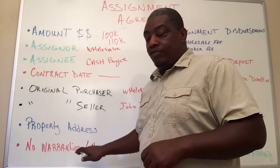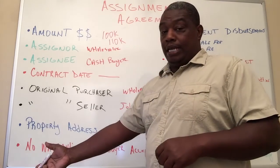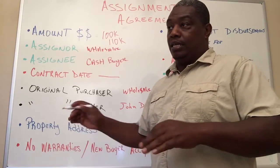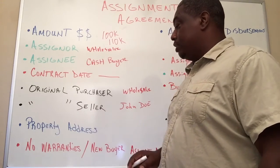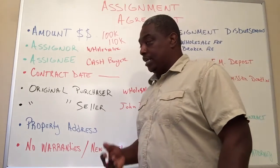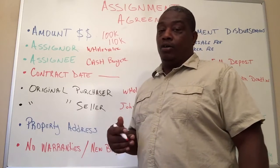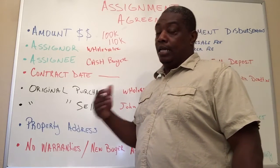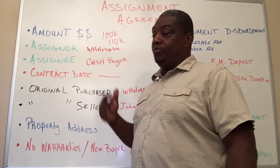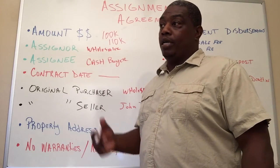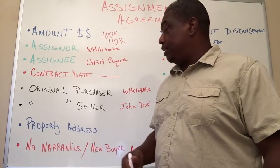And then you need to have the property address. As I stated, the contract is self-explanatory; just make sure you have it reviewed by your attorney. We use this assignment agreement not only in Arizona but also in Illinois as well. If you're in those two states, you'd be able to use this agreement immediately — they've already been approved by attorneys.